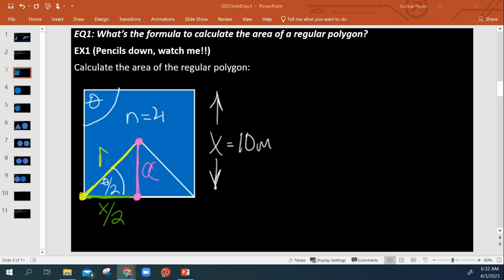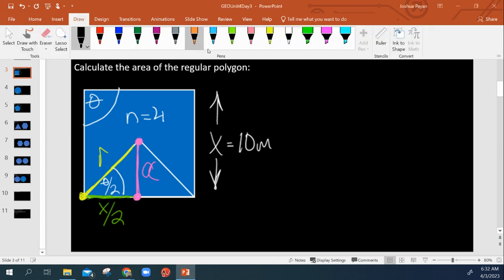So this is going to be our first of two videos for Geometry, Unit 4, Day 3. And in it, we are going to be discussing the area of regular polygons. So we already talked about perimeter, and now we're getting into area. So here we see a regular quadrilateral as our first example.